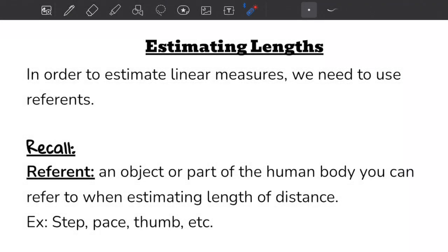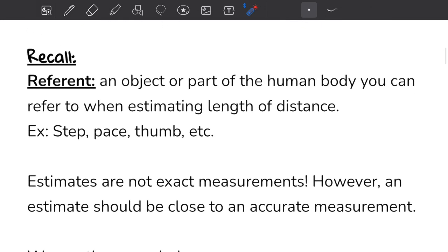In this video we're going to discuss how we go about estimating linear measures or lengths. In order to estimate lengths we need to use referents. A referent is an object or a part of the human body that you can use or refer to when estimating the length of a distance. Some examples are the step, pace, and thumb.